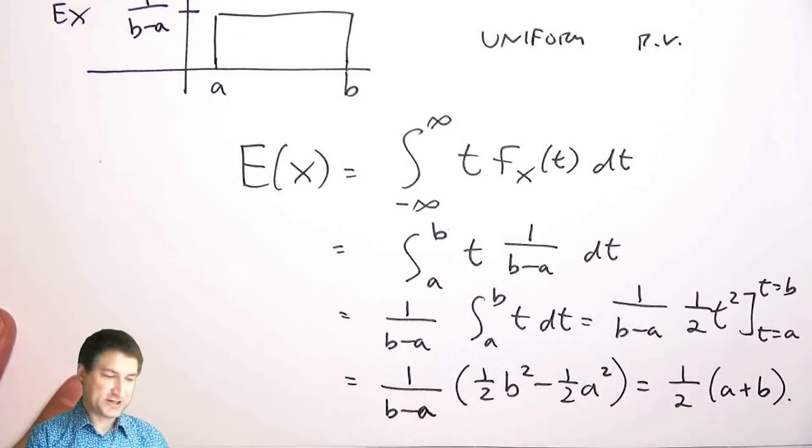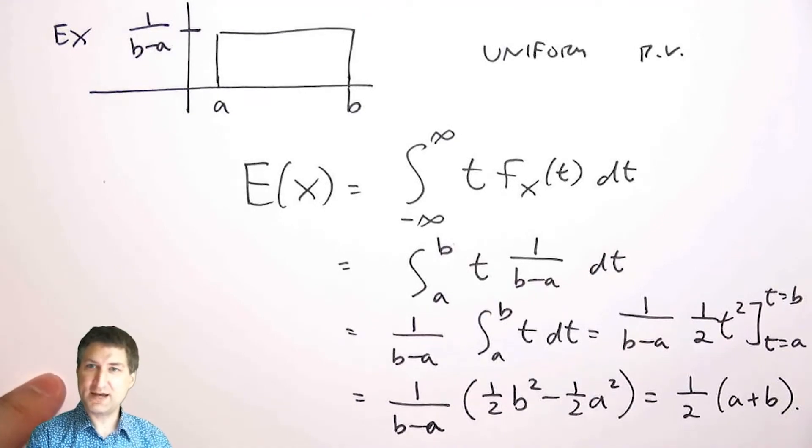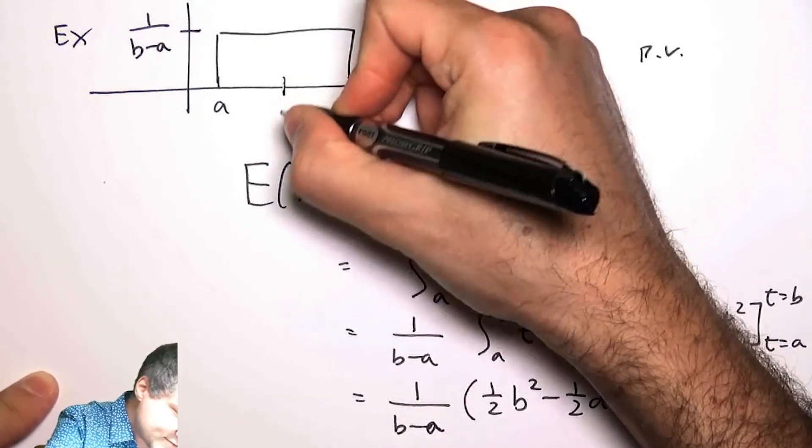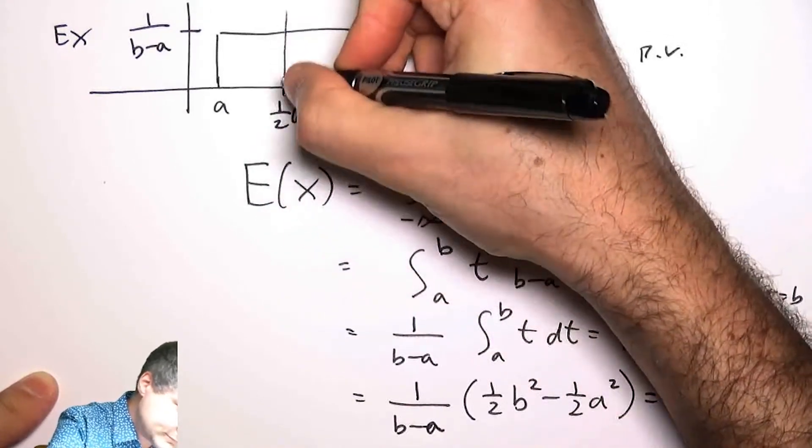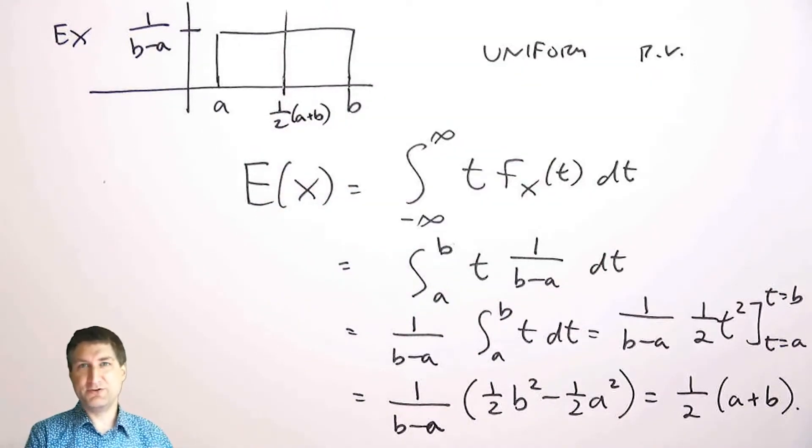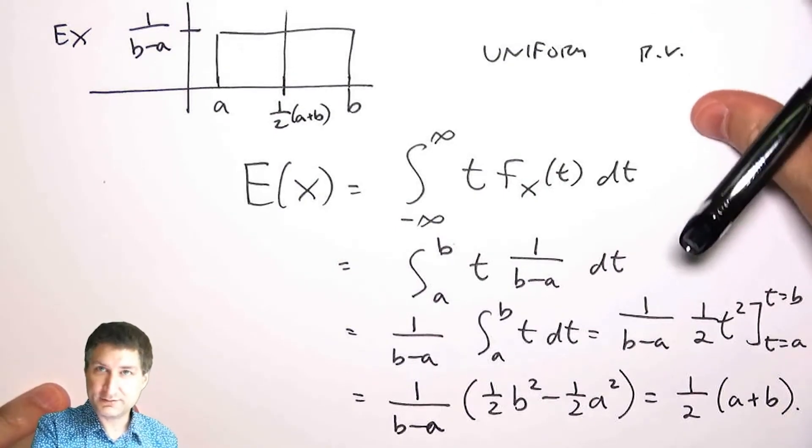And I look back at my picture and I see, oh, this makes sense, right? Because this is like saying that the expected value of the uniform random variable is this point right in the middle.